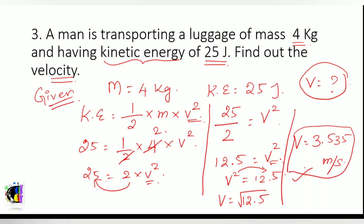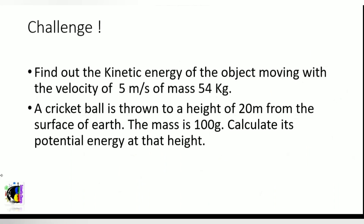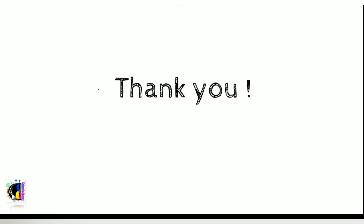Here are two practice questions for you: first, find the kinetic energy of an object moving at 5 meters per second with a mass of 54 kilograms. Second, a cricket ball is thrown to a height of 20 meters; the mass is 100 grams — calculate its potential energy at that height. Find the answers and post them in the comment section below. Thank you all, have a great day!